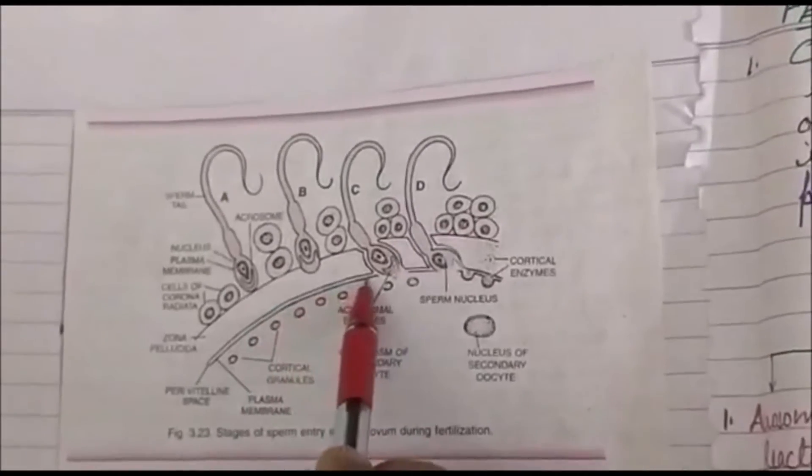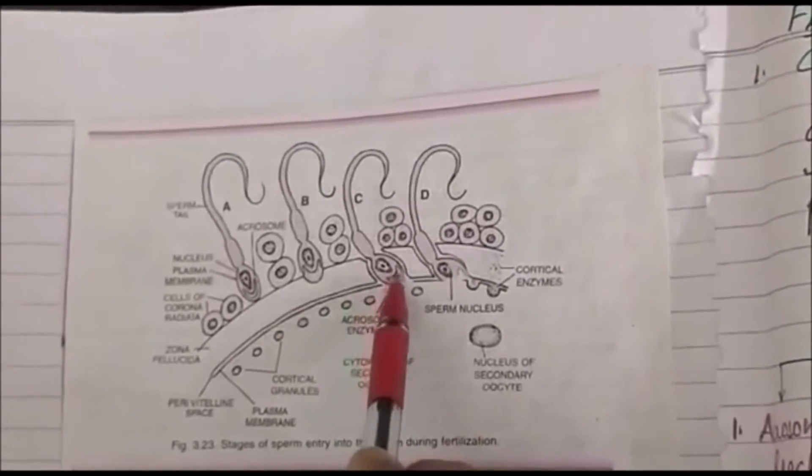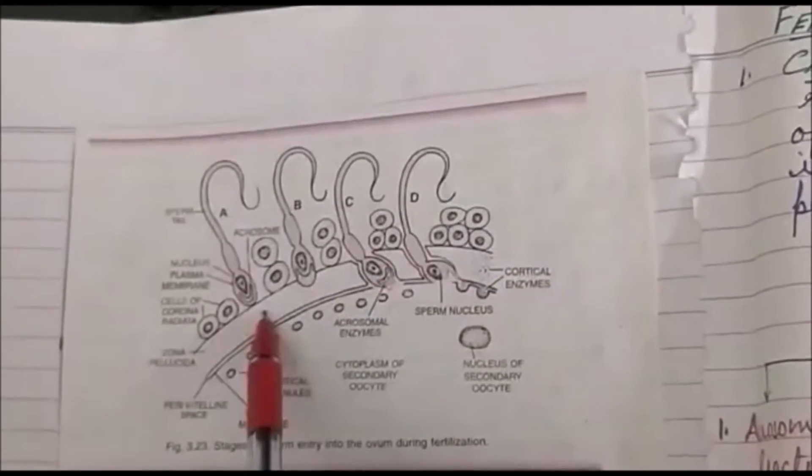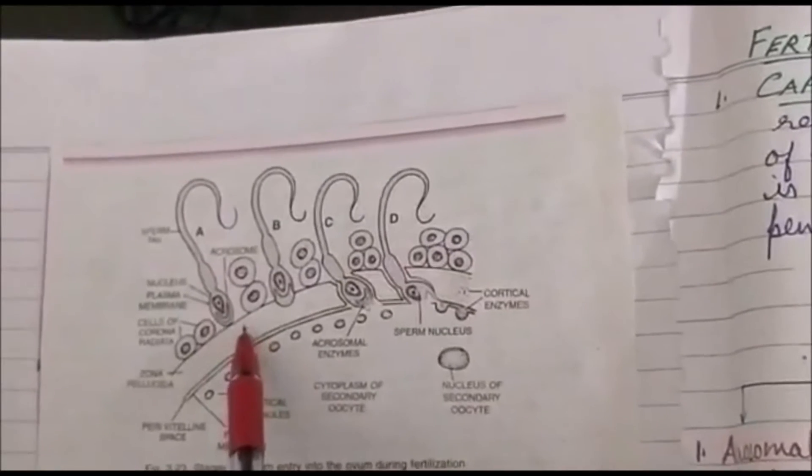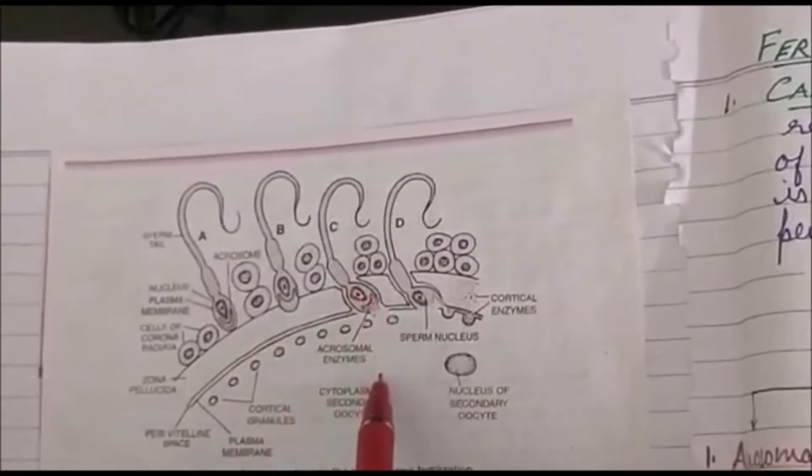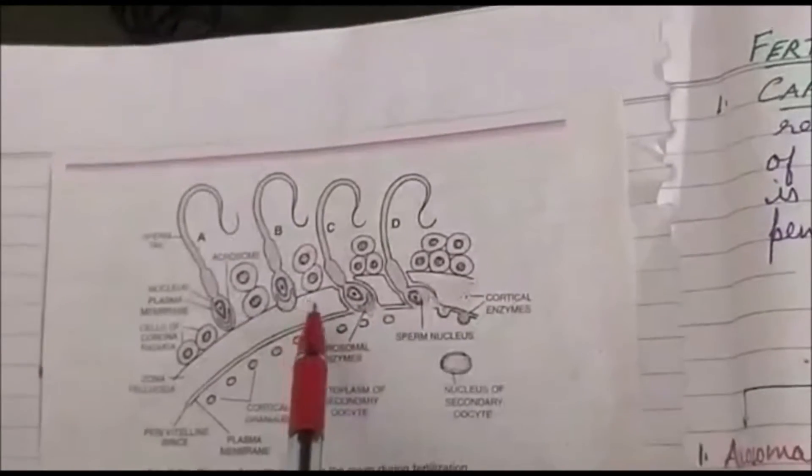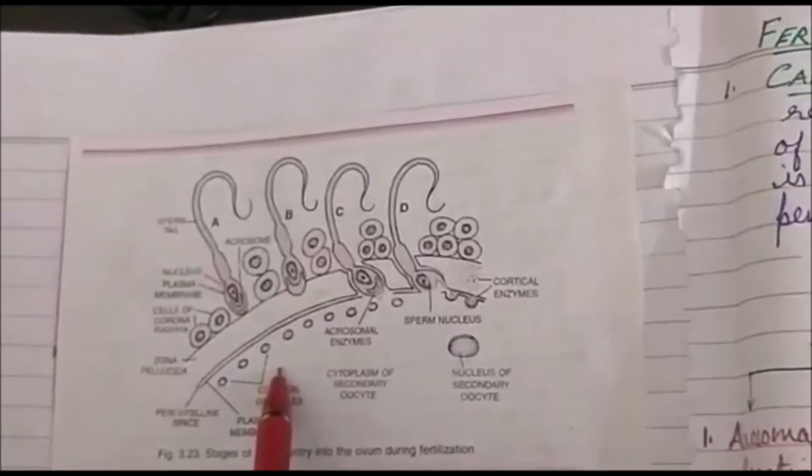You can see this is the plasma membrane of the secondary oocyte. The moment the plasma membrane of both the sperm and the secondary oocyte fuses, the zona pellucida undergoes depolarization. This prevents more sperms to enter. Rather, it favors monospermy and prevents polyspermy. So this is acrosomal reaction.